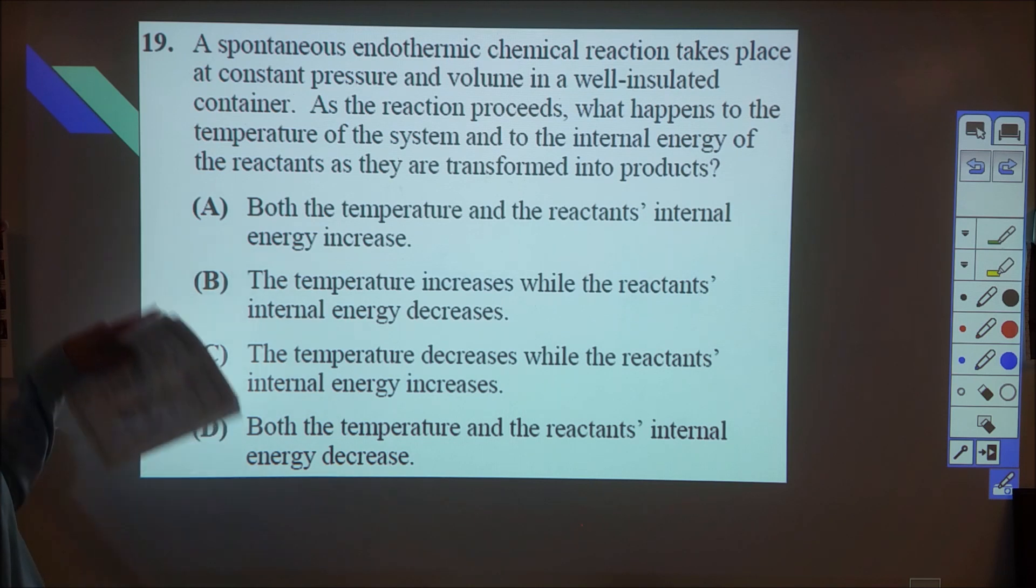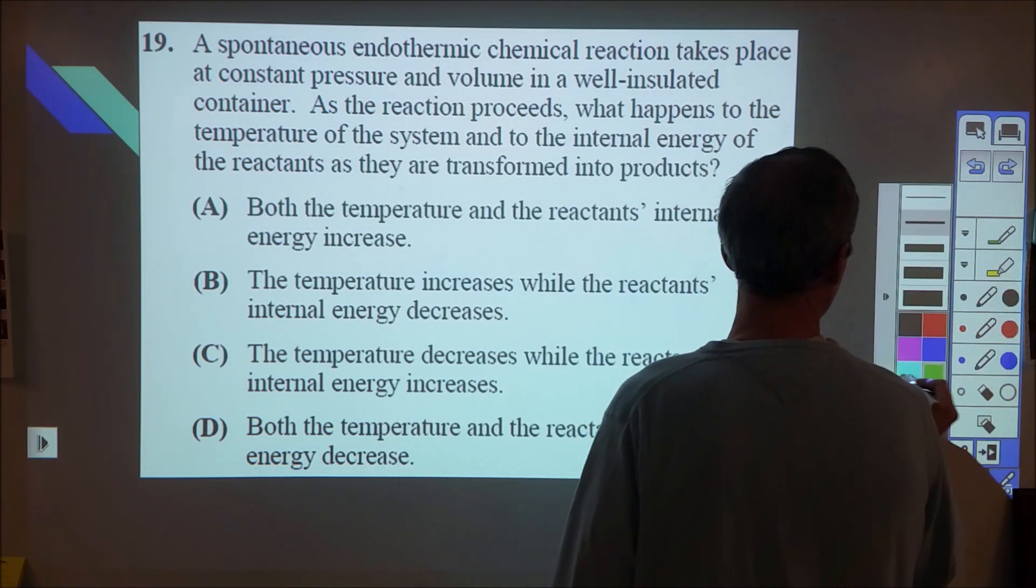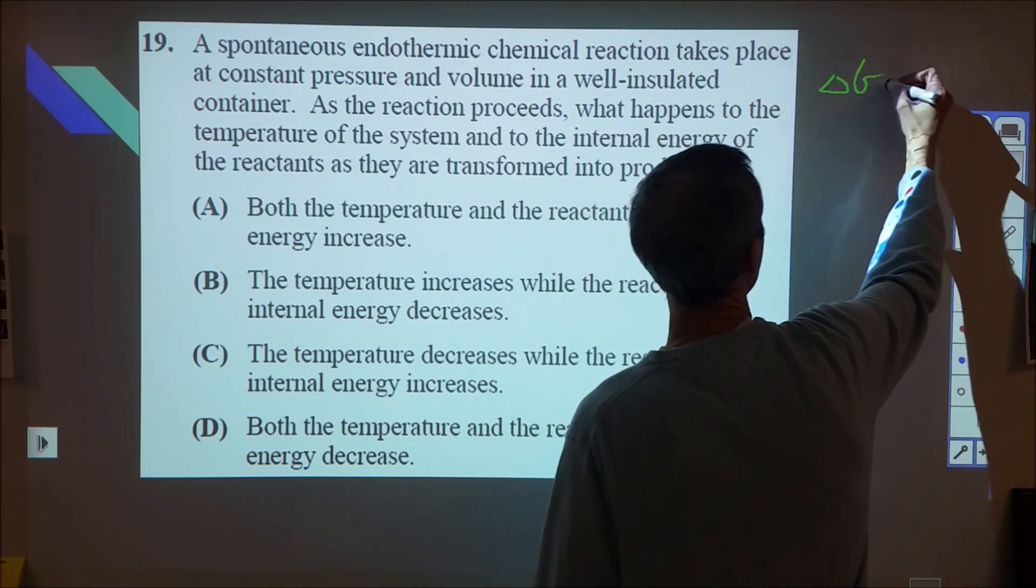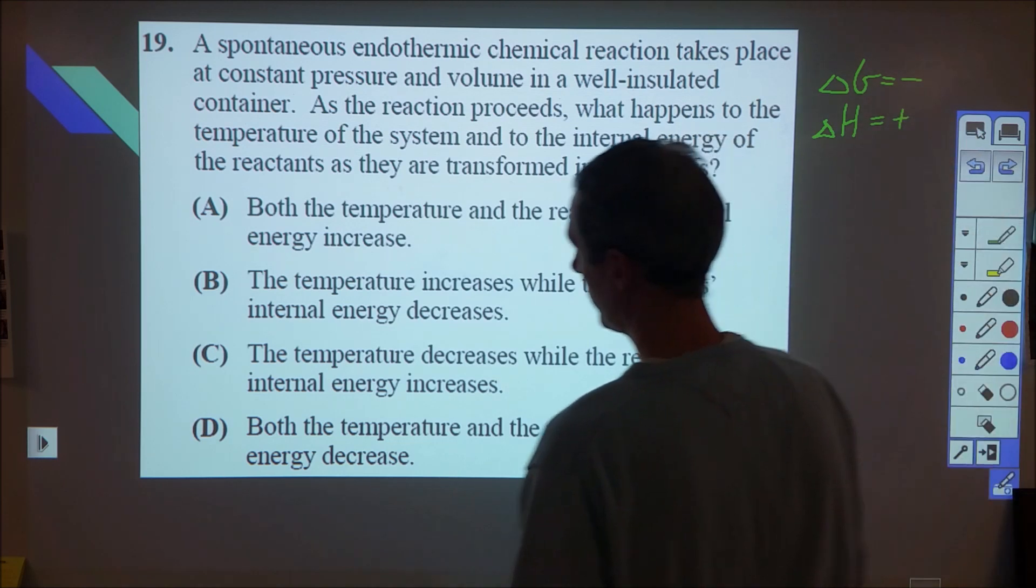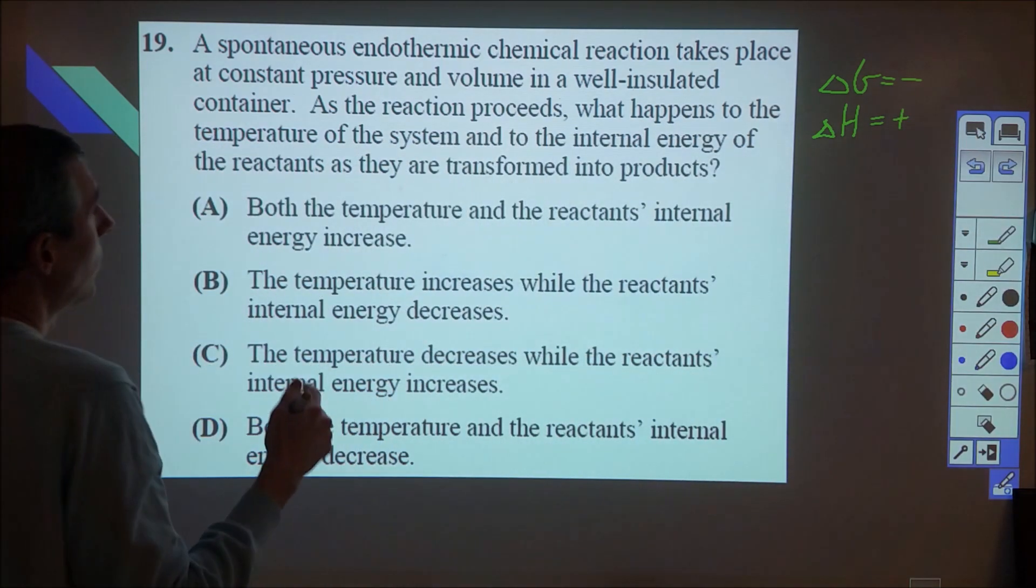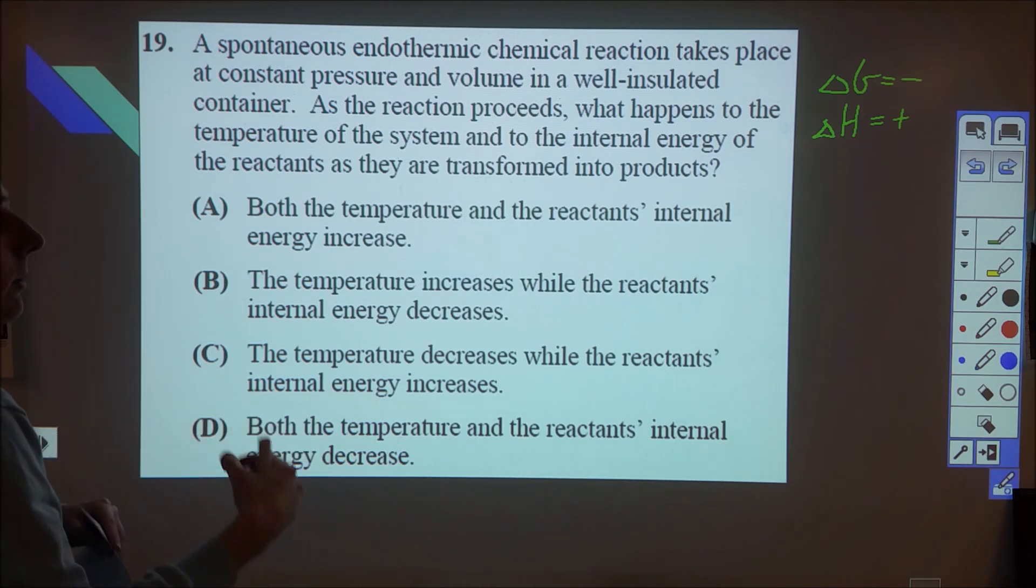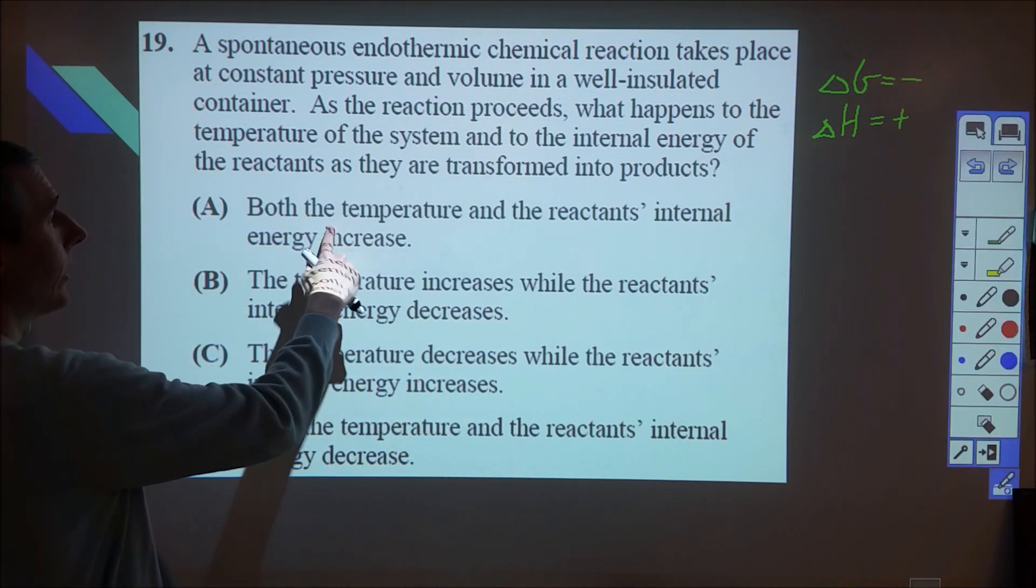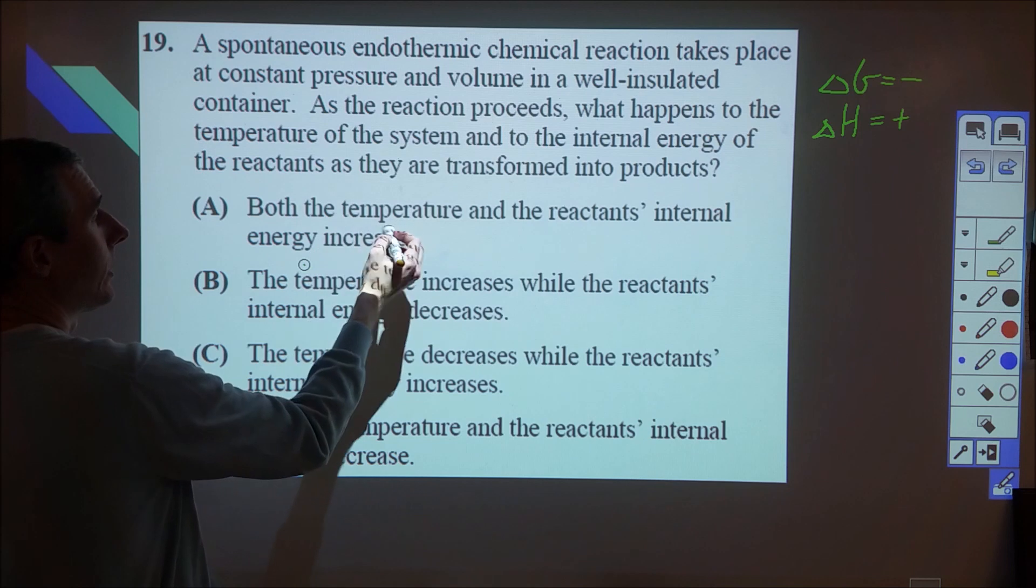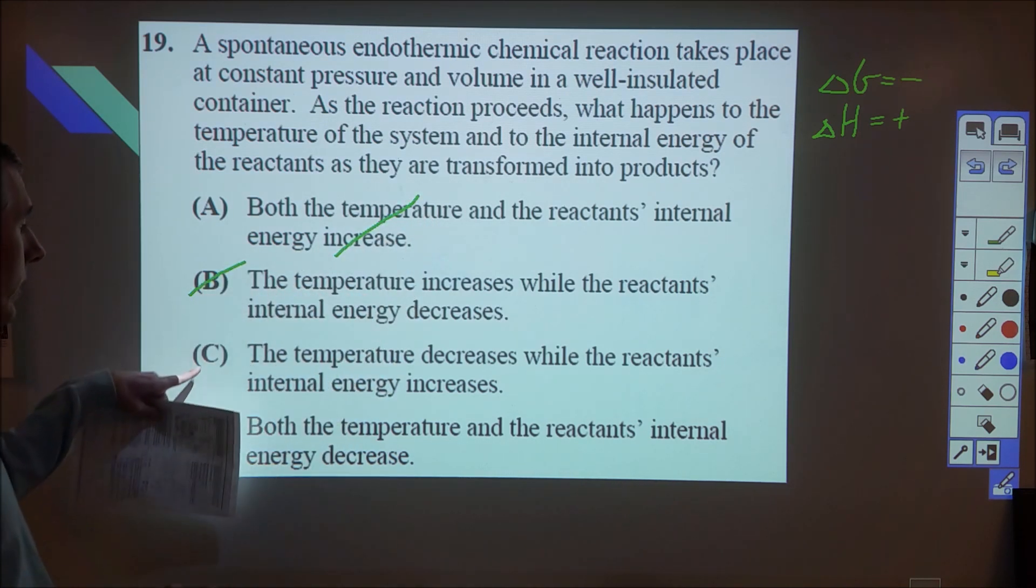Here we need to translate some things. We have a spontaneous endothermic chemical reaction. Let's write those down: spontaneous means delta G is negative, and endothermic means delta H is positive. If it's endothermic, what's going to happen is as the chemicals react, they're going to slow down as a result of an increase in chemical energy, so that means the temperature is going to drop.